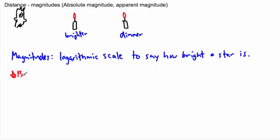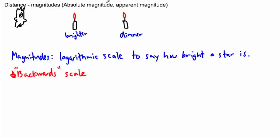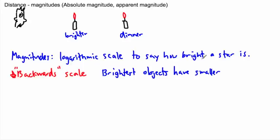I consider it a backwards scale. What I mean is you would expect that if something is really bright, it would have a large value, just like luminosity — if something is very luminous, it has a very large luminosity value. But magnitudes work the opposite way: brighter objects actually have smaller magnitudes, which sounds kind of silly.